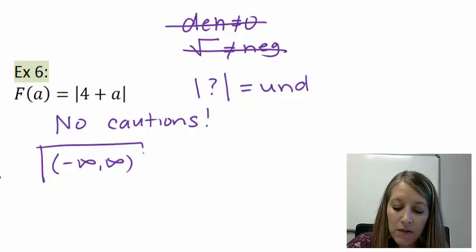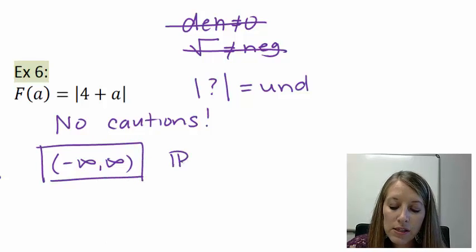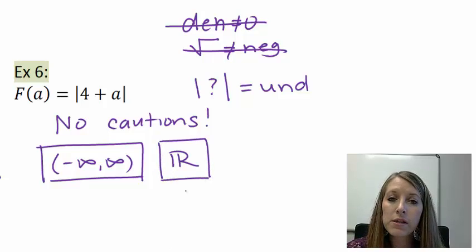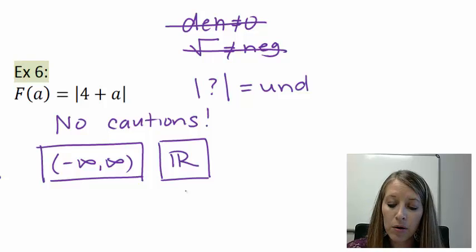If we wanted to do this in set builder notation, we use that double bar R, which means all real numbers, meaning we can substitute any possible number into that a variable and it come out to be an okay variable.